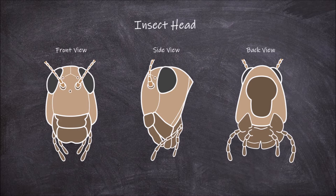The head has two openings: one where the mouth parts join to the head, and one posteriorly called the occipital foramen, where the head attaches to the thorax. The head is made up of several sclerites separated by sutures.